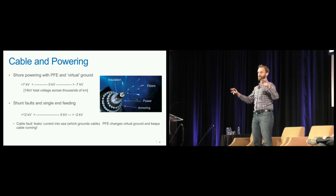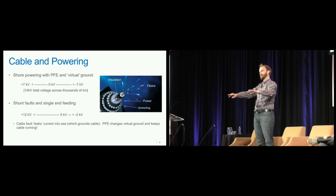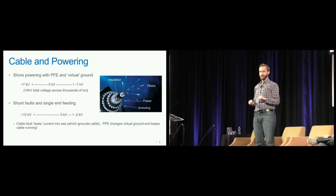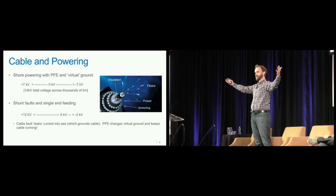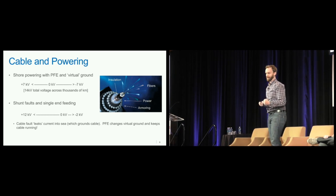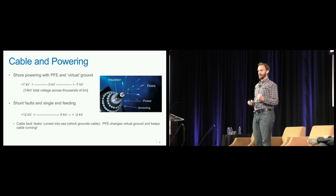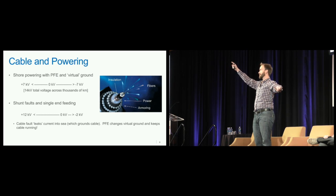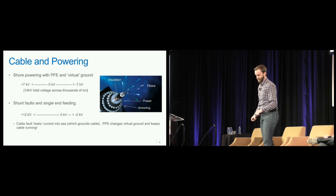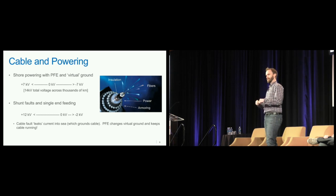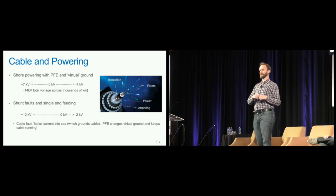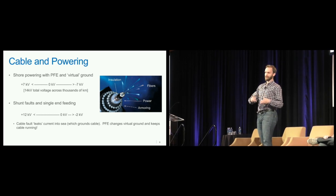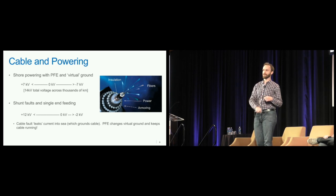The power feed equipment is really cool. Imagine a cable 12,000 kilometers across the ocean — all you have is equipment on the ends to power it. In this example, I've shown a 14 kilovolt PFE. You set the PFE to plus 7 kilovolts on one side and minus 7 on the other, and somewhere in the middle there's a virtual ground at zero. The 14 kilovolts runs across the copper — just a few milliamps — and it powers all the active components of the cable, amplifying the light every 60 to 80 kilometers.